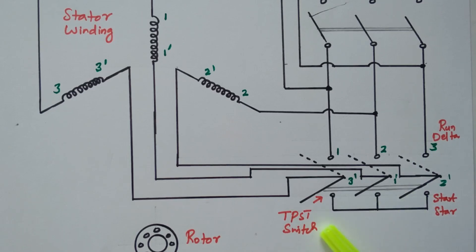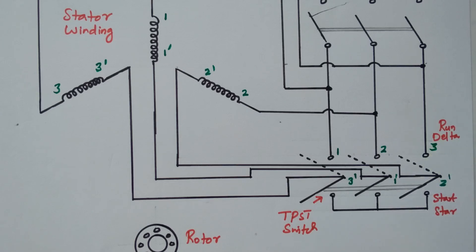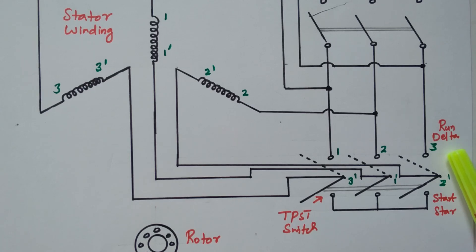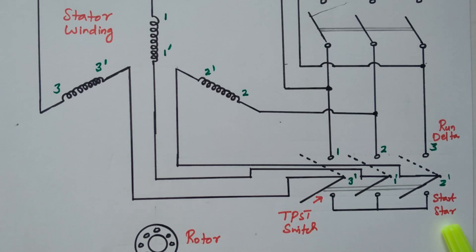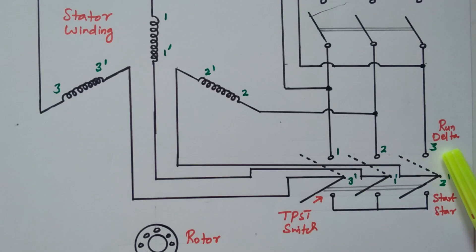The TPST switch is changed from the bottom to the top, so that the induction motor stator winding is connected with the delta connection. During delta connection, it will draw the full voltage — root 3 times the voltage — so that the rated voltage is applied to the stator winding, and the current drawn also gradually increases and the motor will run at normal speed. The main aim during starting is to connect the stator winding in star in order to reduce the voltage to 1 by root 3. Once the motor gains normal speed, the connection is changed to delta.